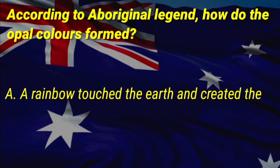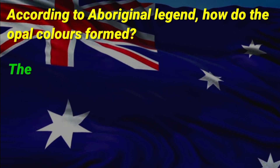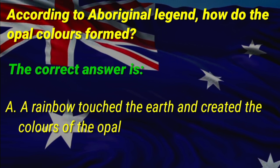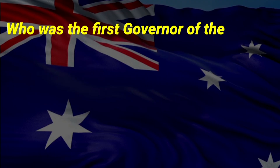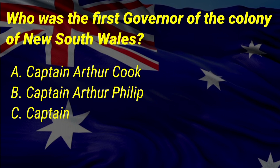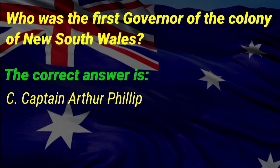A: a rainbow touched the earth and created the colors of the opal, B: raindrops on the earth created opal's colors, C: none of the above. The correct answer is A, a rainbow touched the earth and created the colors of the opal. Who was the first governor of the colony of New South Wales? The correct answer is C, Captain Arthur Phillip.